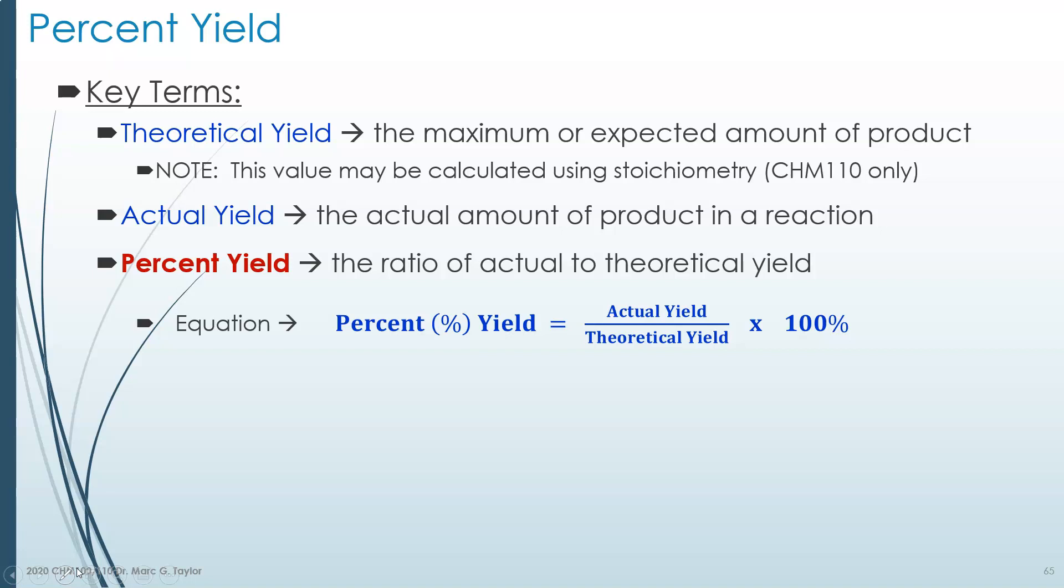and divide it by how much you expected to get if the reaction went 100% to completion. That's your theoretical yield - the number of grams or mils or moles of what you expected to get. Then you turn it into a percent by multiplying by 100%. So your percent yield is how much you made divided by how much you should have made times 100%.